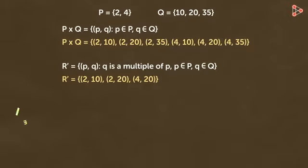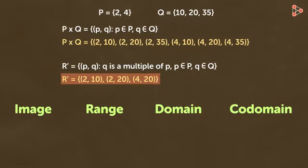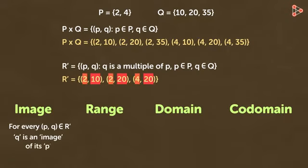Now let's talk about the terms Image, Range, Domain and Co-Domain. We know that the set R' has three ordered pairs: 2,10, 2,20 and 4,20. Here we can say that 10 is an image of 2, 20 is an image of 2 and 20 is an image of 4. We can say that every Q in set R' is an image of its P.